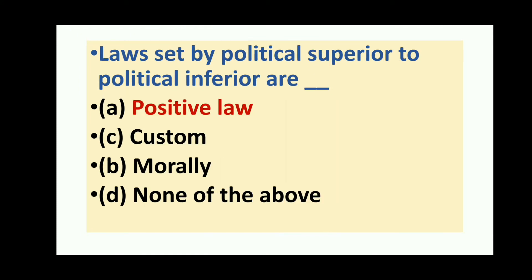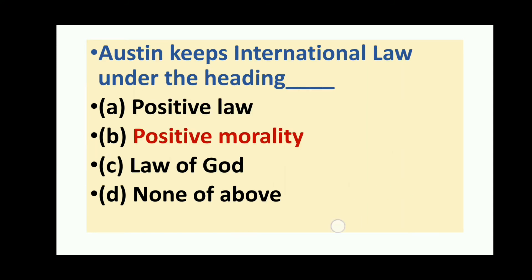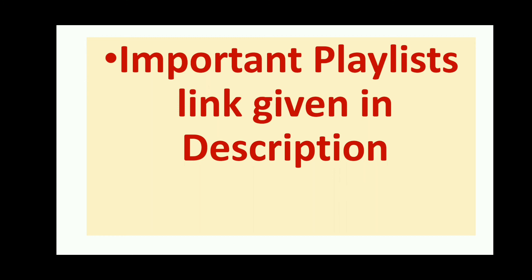The limits of jurisprudence: laws set by political superior to political inferior are positive law. Austin keeps international law under the heading of positive morality.